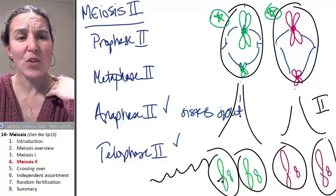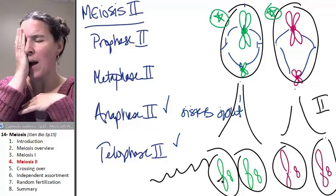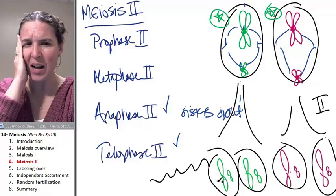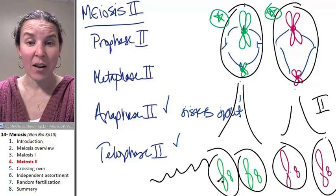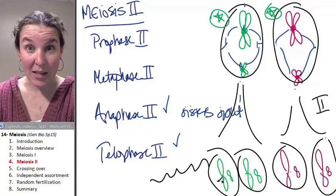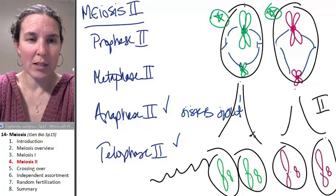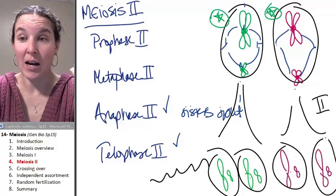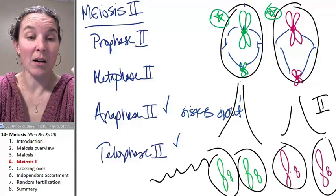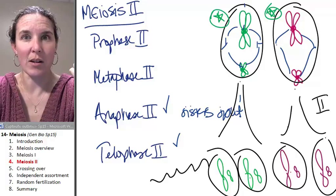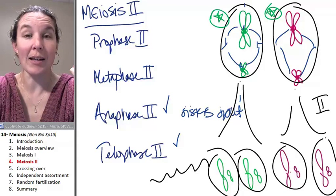And then if you start thinking about, whoa, how many possible sperm are there and how many possible eggs are there? And then how many possible babies can you make? Holy random fertilization madness of fun times and diversity. I'll be right back and let's talk about crossing over.